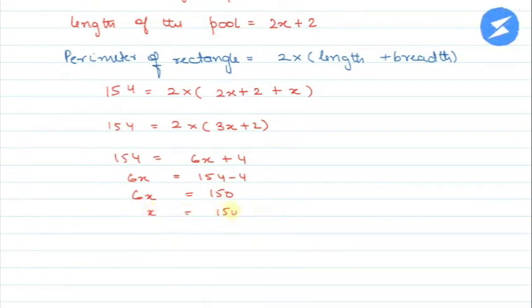So now 6x is equal to 150. Now here x is equal to 150 upon 6, so now x will be equal to 25 meters.